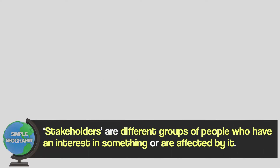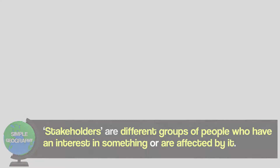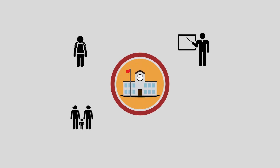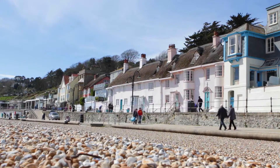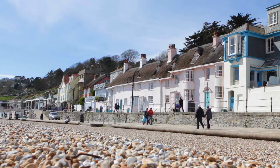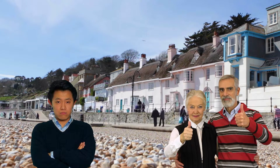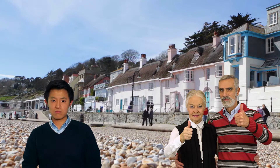Stakeholders are different groups of people who have an interest in something or are affected by it. For example, a typical school has lots of stakeholders — students, teachers, parents, the government — they are all people who are interested in what happens at the school, are affected by it, or both. If a UK town builds a sea wall, some people like local residents might think that it's great, but environmentalists would be opposed to it. This means that you can't really say it's completely good or completely bad. Every stakeholder has their own opinion, and that's why it's an important keyword.